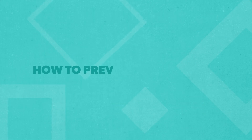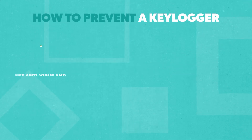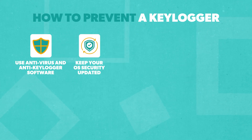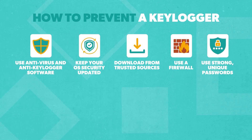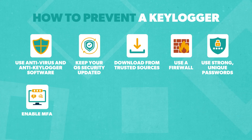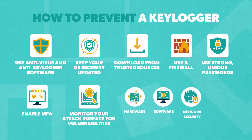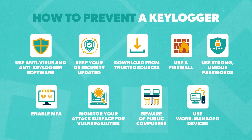For unknown devices, hardware keyloggers will likely be connected between your keyboard cable and computer. To keep your data safe, use antivirus and anti-keylogger software, make sure your OS is up to date with the latest security patches, download only from trusted sources, beware of phishing attempts, use a firewall, use strong unique passwords, enable multi-factor authentication, and monitor your attack surface for vulnerabilities — that means hardware, software, network, and even other people using your device.